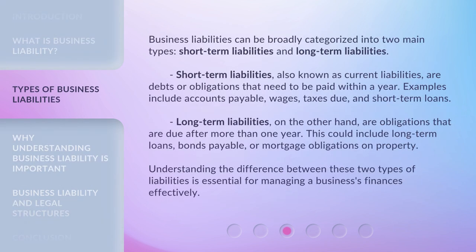Business liabilities can be broadly categorized into two main types: short-term liabilities and long-term liabilities. Short-term liabilities, also known as current liabilities, are debts or obligations that need to be paid within a year. Examples include accounts payable, wages, taxes due, and short-term loans.